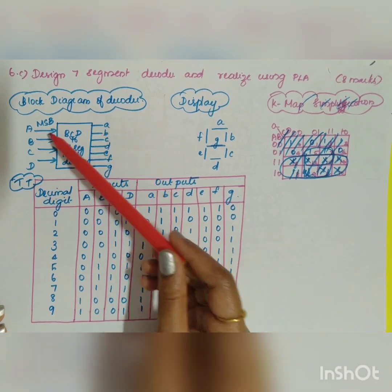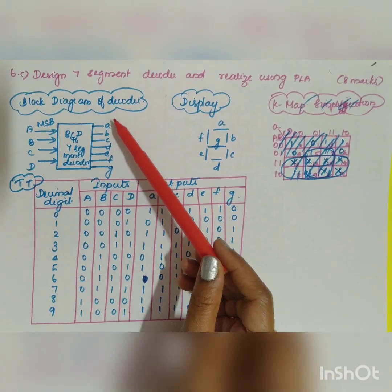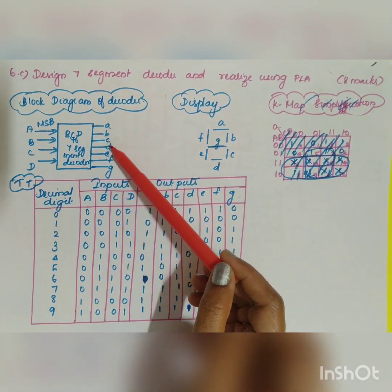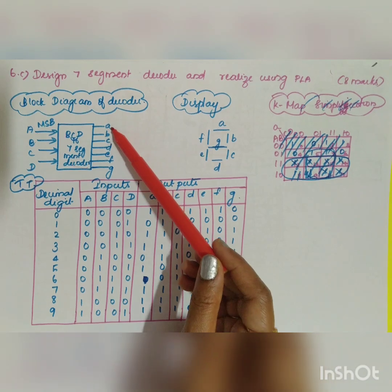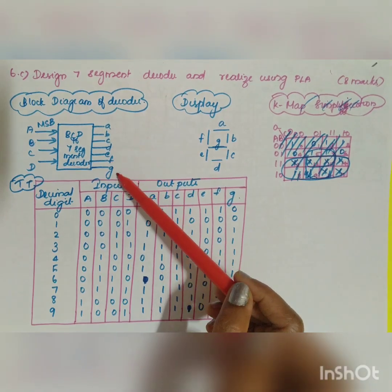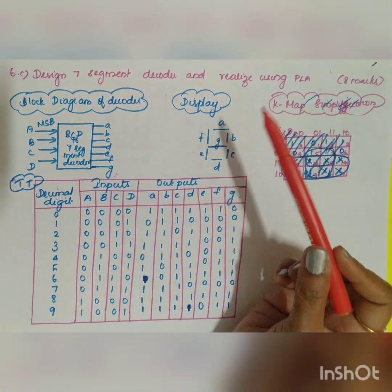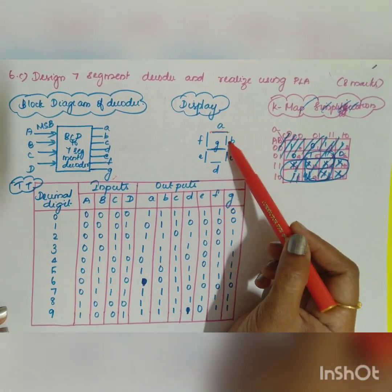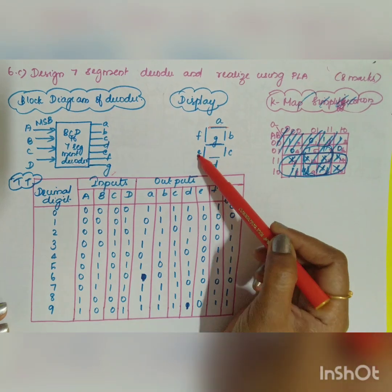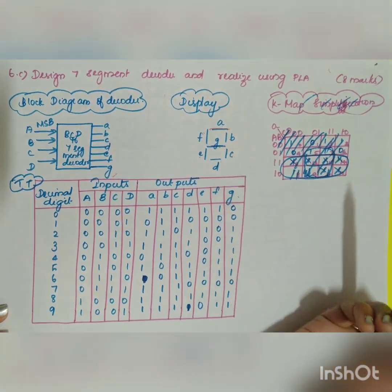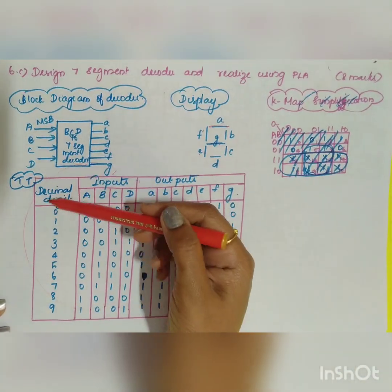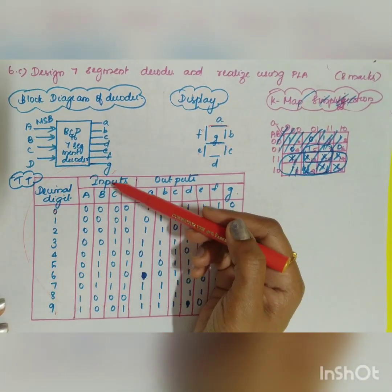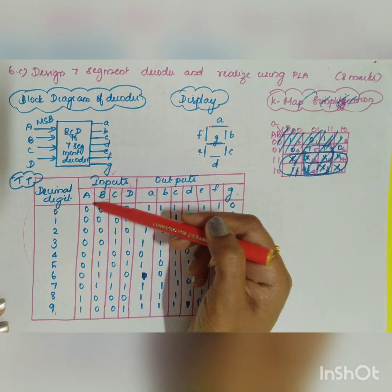You will be getting seven outputs: a, b, c, d, e, f, g — indicated by small letters. This drives your seven-segment display. The truth table covers decimal 0 to 9, with inputs A, B, C, D and outputs a, b, c, d, e, f, g.